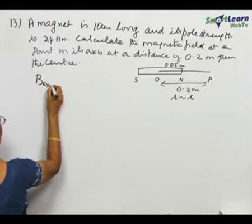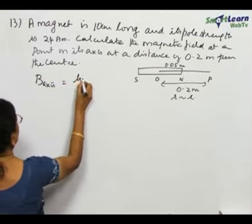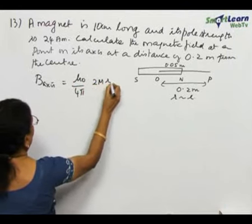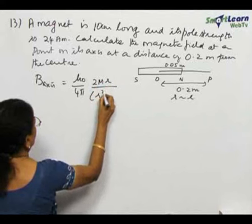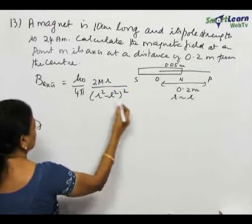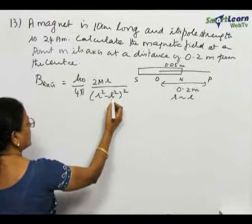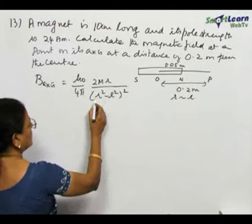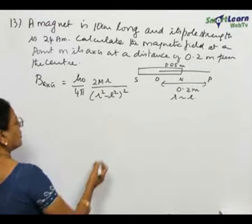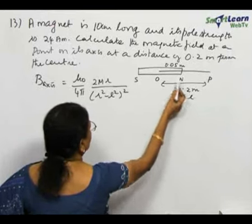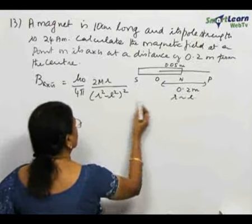The magnetic field along the axis is given as μ₀/4π × 2mR/(R²-L²)². Now, if R is much greater than L, that means short magnet, we can omit this L² and we will get 2m/R³. That is approximated formula. But, comparing this is 20 centimeter, this is 5 centimeter, we cannot approximate.